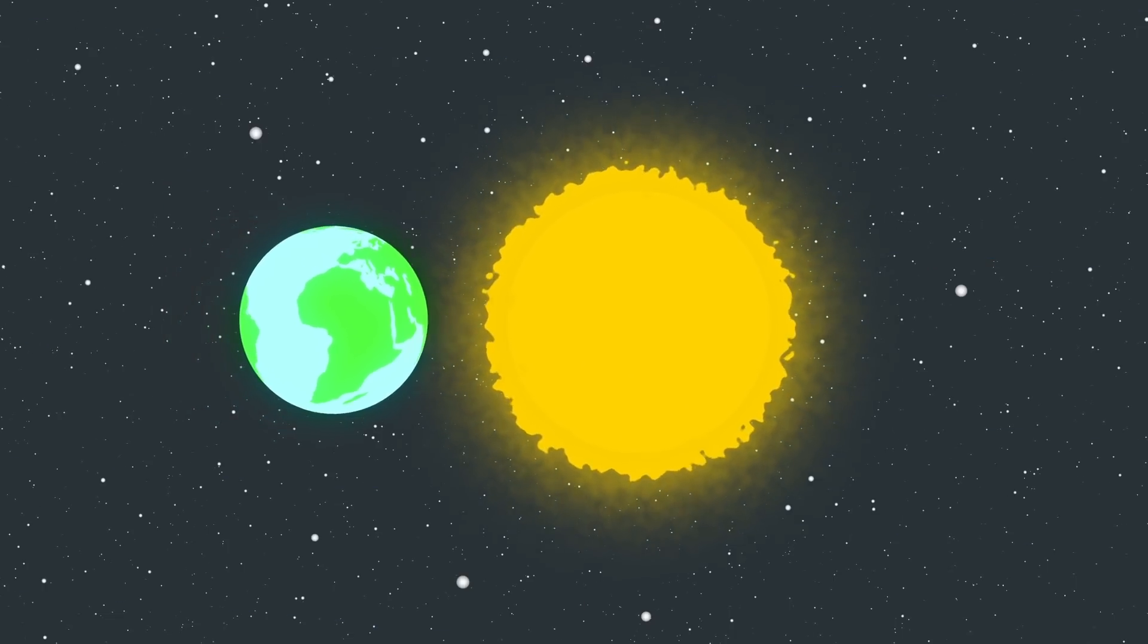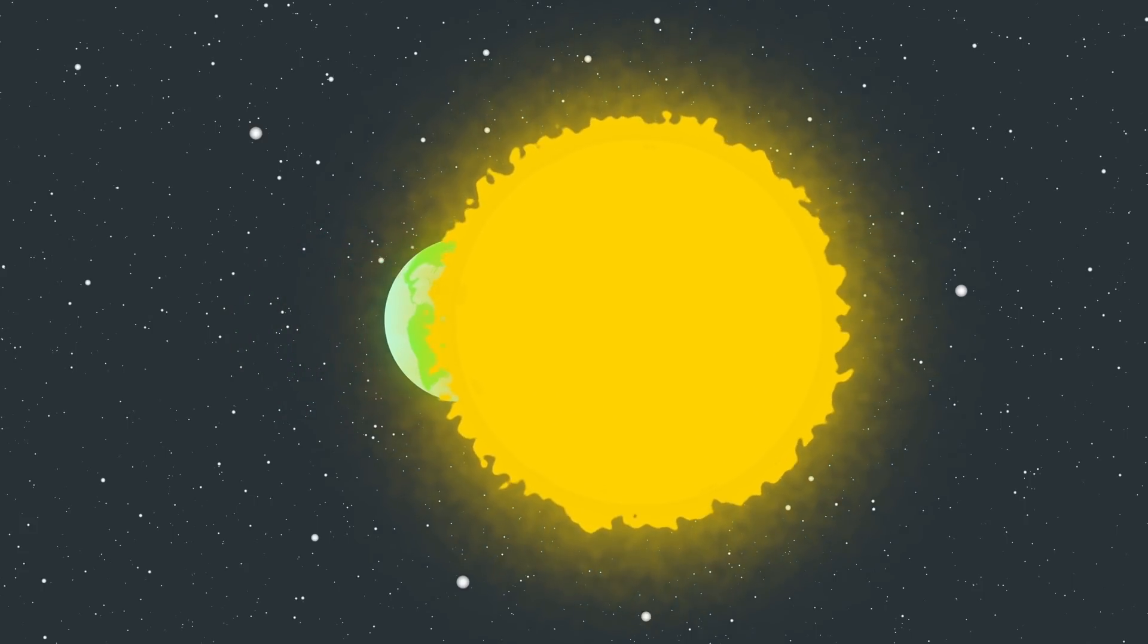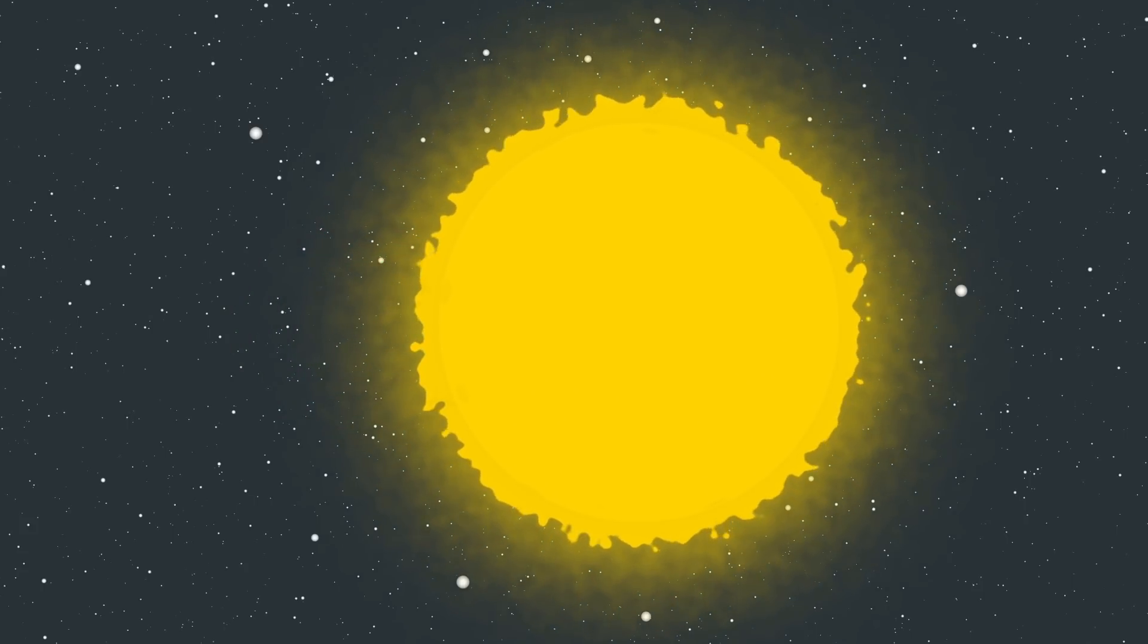But yeah guess what? The sun will expand in just another 5 to 7 billion years to touch the earth's orbit. And the earth will die before then.